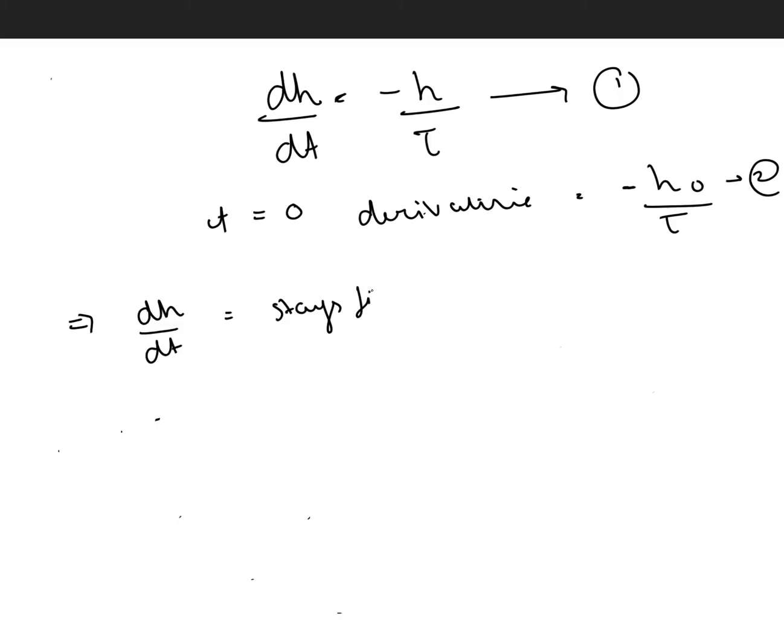Now according to our leaky tank equation, we have dh/dt equals minus h/τ. This was the most valuable equation. When we started at t equals zero, the derivative becomes minus h0/τ. So let's assume for now that dh/dt stays fixed, it stays fixed for a whole time. And the height falls by approximately h0 × T/τ, whatever distance it has traveled upon the timeframe.